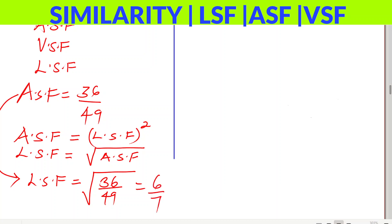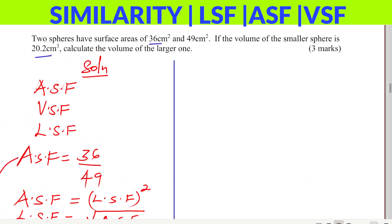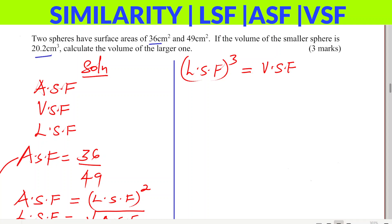After getting the linear scale factor, this helps us get the volume scale factor. The relationship is that linear scale factor cubed gives the volume scale factor — that is the ratio of volumes of two similar figures.